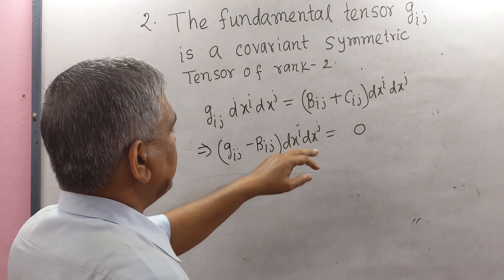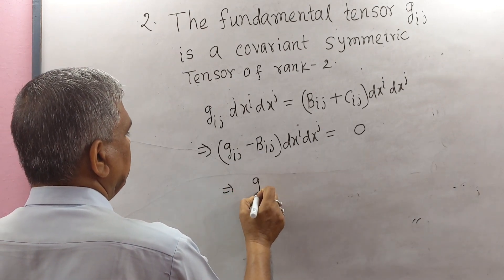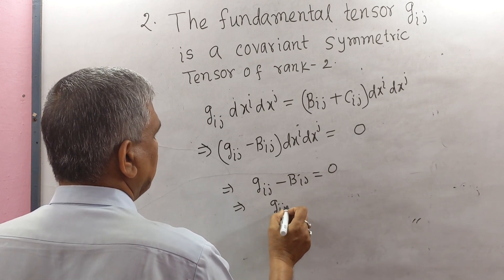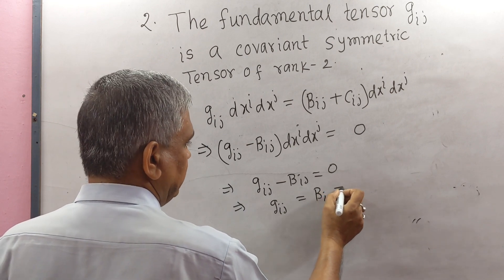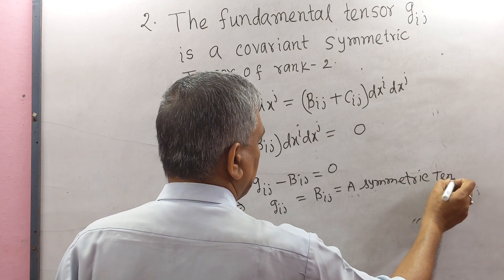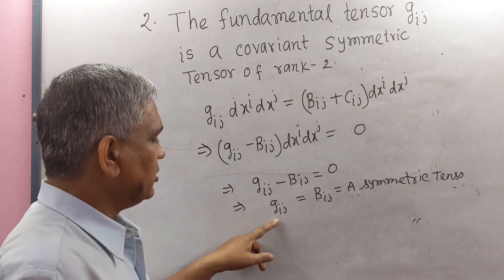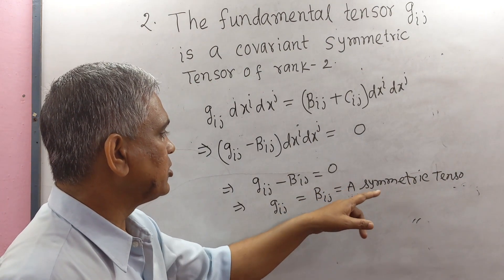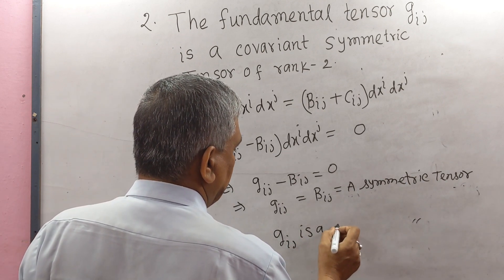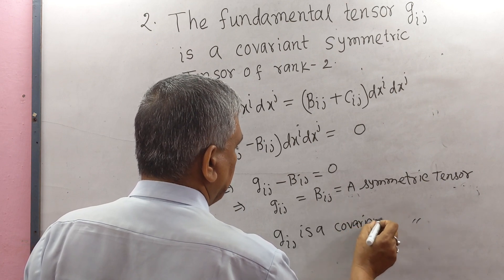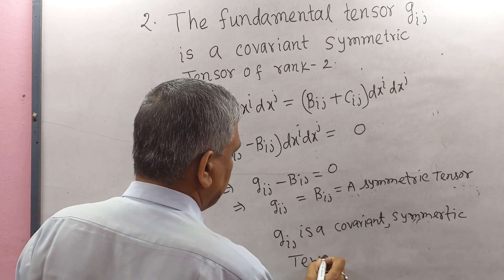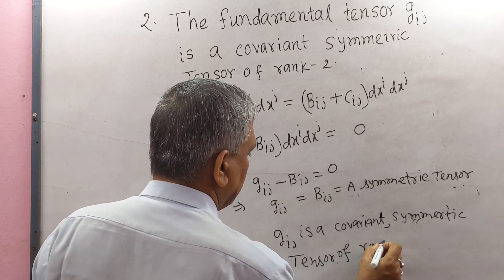Since dxI and dxJ are arbitrary vectors, we may write g_IJ − B_IJ = 0, which implies g_IJ = B_IJ. Since B_IJ is a symmetric tensor, g_IJ is a symmetric tensor. We have already proved g_IJ is a covariant tensor of rank 2, and here we get it is symmetric. So we may conclude that g_IJ is a covariant symmetric tensor of rank 2. Proved.